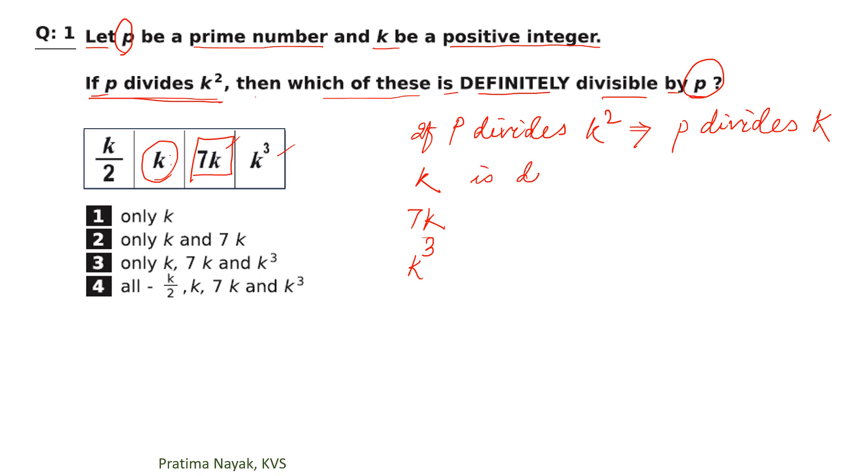K is divisible by P. This is the logic, fundamental theorem of arithmetic. 7K is also divisible by P. Now you can find out which one is the answer. Certainly, 3 will be the answer. K, 7 times of K, K cube are all divisible by P. So 3 is the answer for this question.